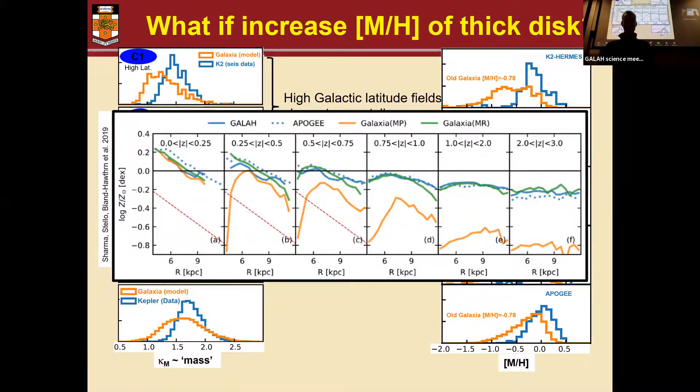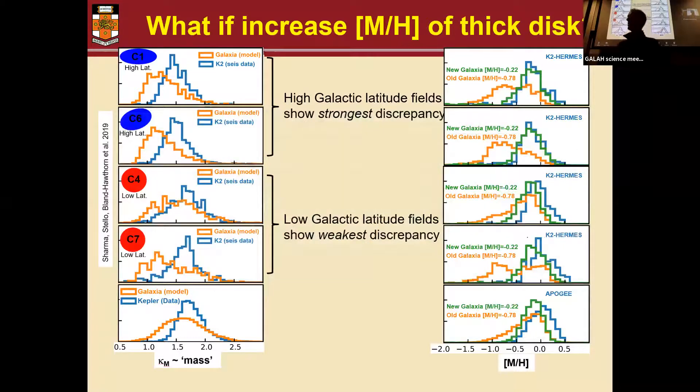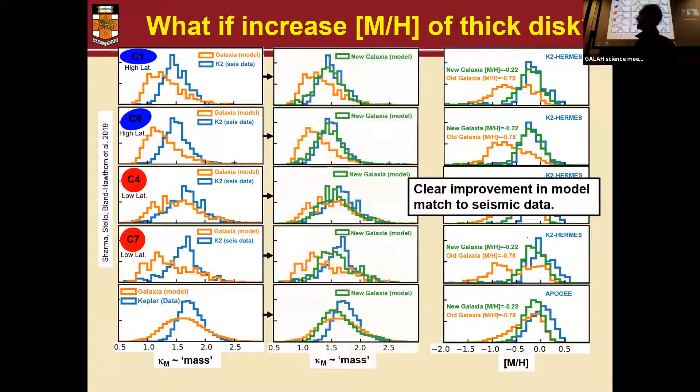And so we went back and said, how does that do for the K2 fields? It indeed did quite well, particularly for the high latitude fields. And we looked at how well this correction was actually going to influence our mass discrepancies. And I should say, what I call mass is called kappa M, it's just a seismic part of the mass. So we have taken temperature out. But you can, for this talk, just regard it as mass in solar units. And what we see is with the new Galaxia model that just has this change in the metallicity of the thick disc, it indeed corrects mostly the discrepancy we see, and in particular, doing well in the high latitude fields.